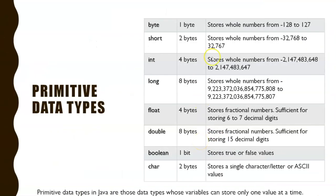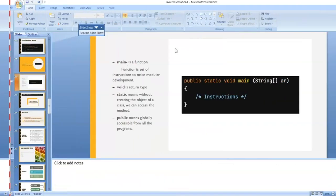100 falls under byte because from minus 128 to 127 you can store it — it is taking only one byte of memory. But when you mention int, it is taking four bytes of memory. Let's write the same thing using byte.